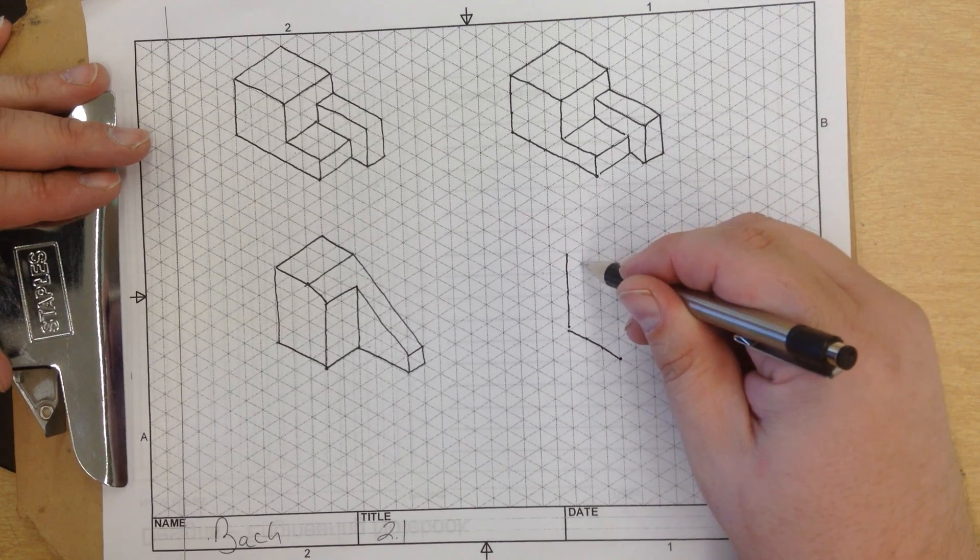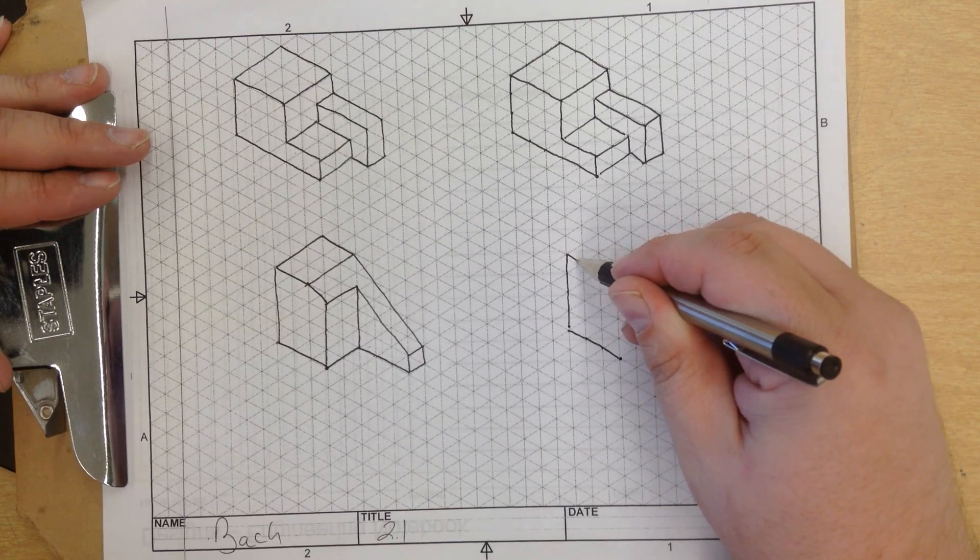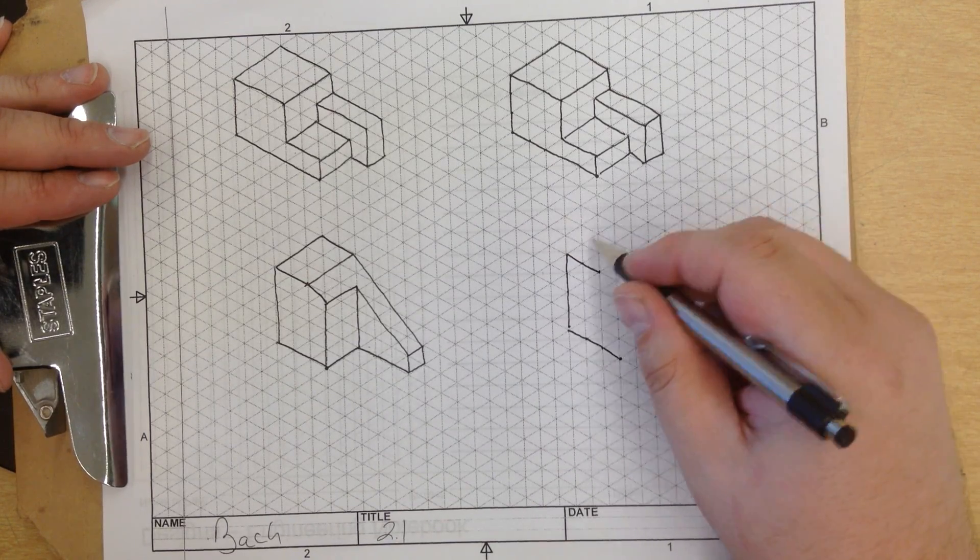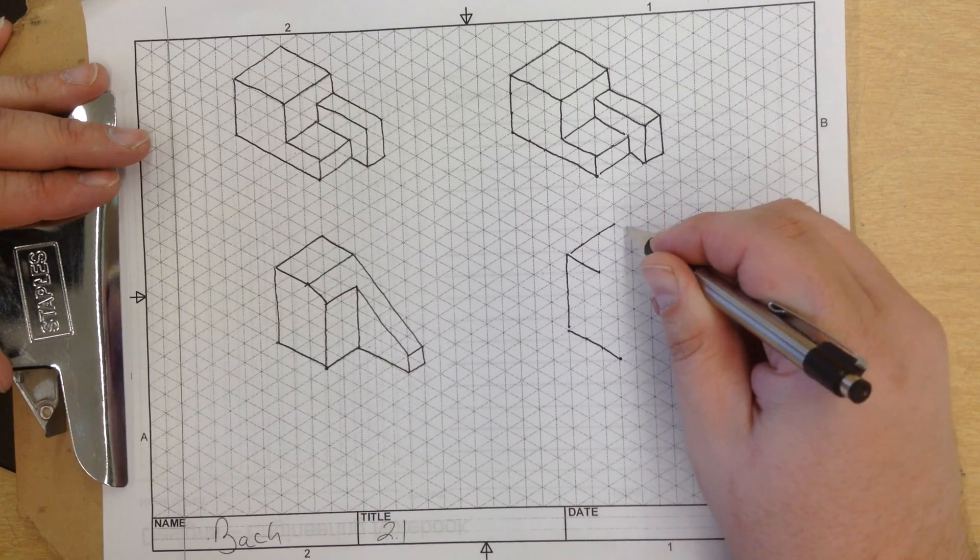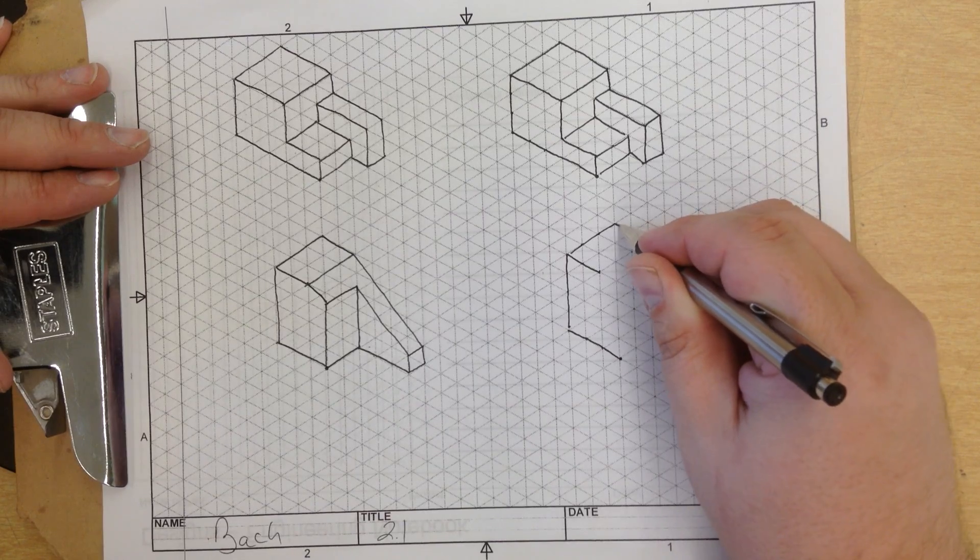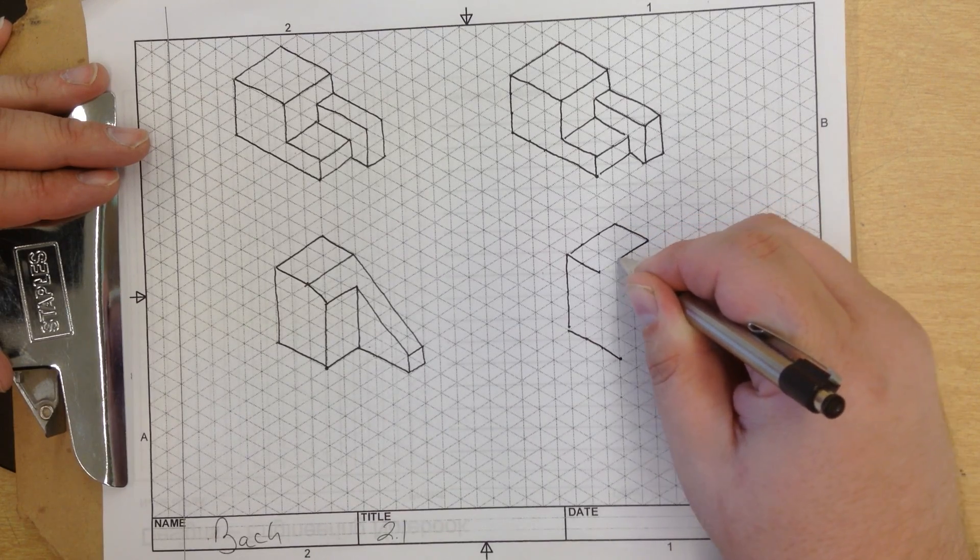It comes 2 units straight - 1, 2. Connect the line. It goes 3 units over - 1, 2, 3, just like so. 2 units - 1, 2 - and we close the shape.